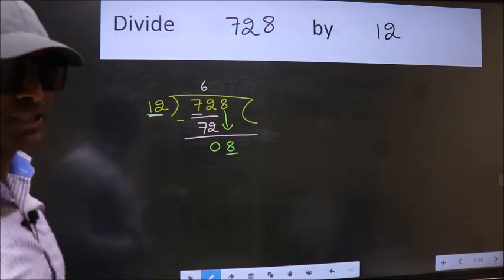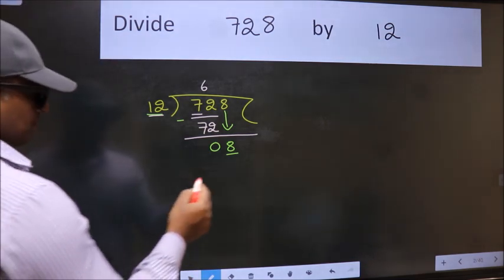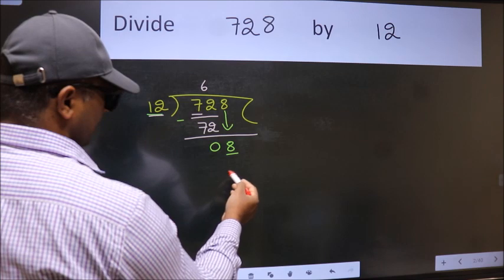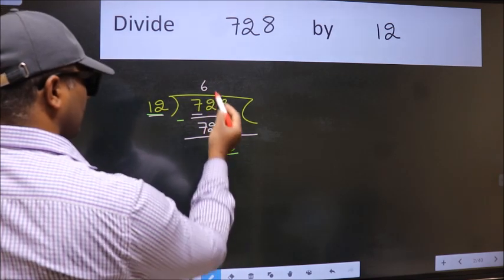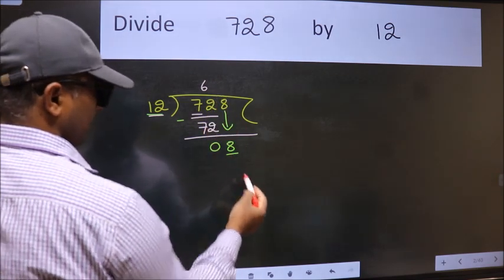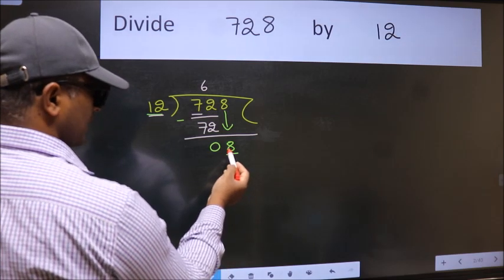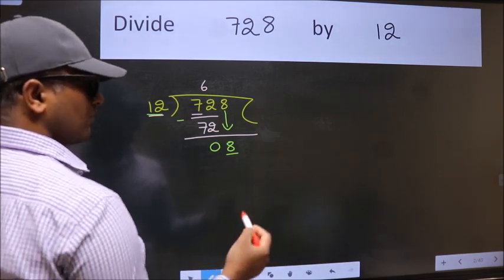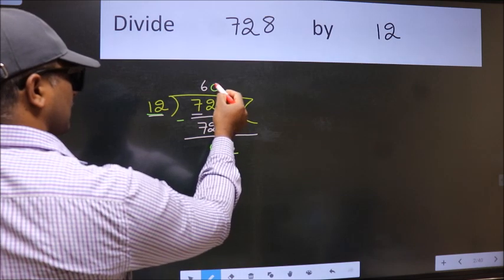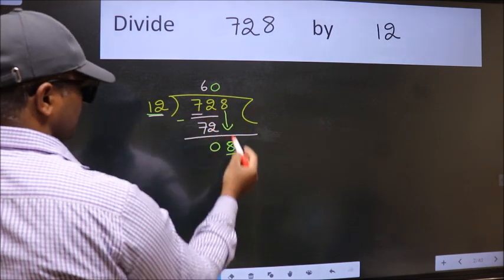Instead of that, what we should think of doing is which number should we take here? If I take 1, we will get 12. But 12 is larger than 8. So what we do is we take 0 here. 12 into 0, 0.